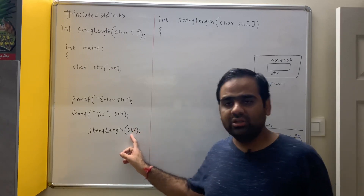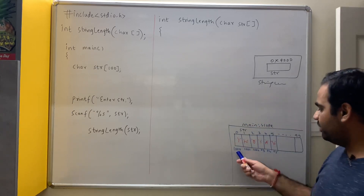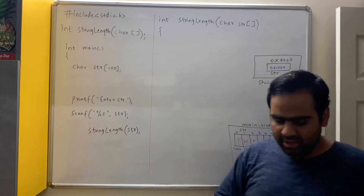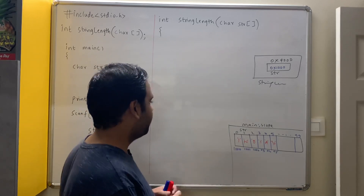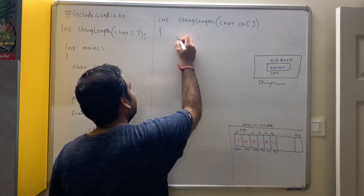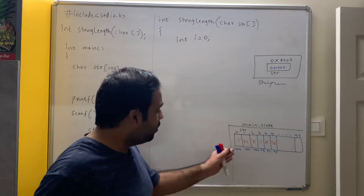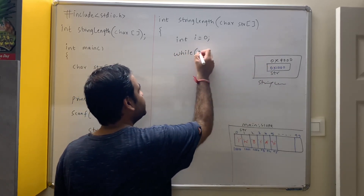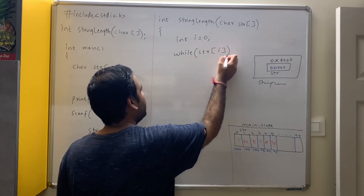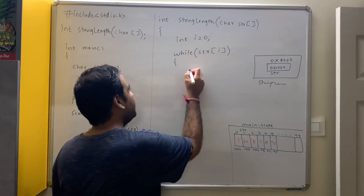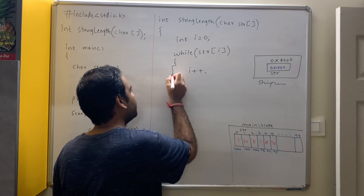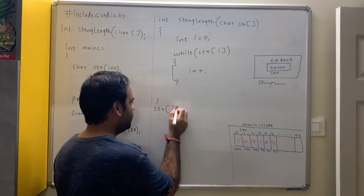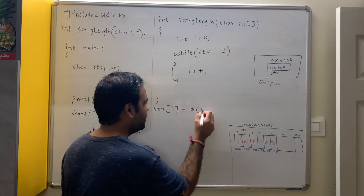Now we need to find the length of the string and we start counting from index 0. We write: int i = 0. Till how long? Till we reach the null character. While — the array name is str — so we say: while(str[i] != null character). Then we just say i++. Now, str[i] in pointer notation is equal to *(str + i). Here you can write str[i] or *(str + i). You can also write the parameter as char *str instead of char str[] — because array name is a base address, address means pointer, address can be stored in a pointer.